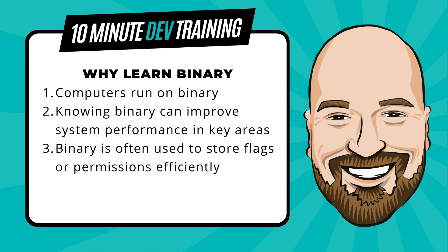Also, binary is often used to store flags or permissions efficiently. For example, you might have a 32-bit integer where each bit is actually a Boolean, so that you have 32 Booleans that indicate yes or no, true or false — do they have permission for this or that or a third thing. We'll see how to use those flags efficiently so that you're storing one number in the database, but it represents up to 32 data points or even more. So that's some of the reasons why you should learn how to work with binary in C#.